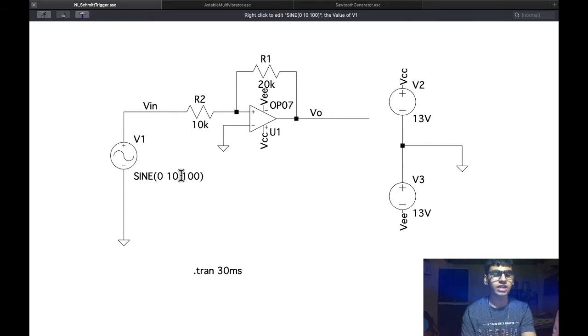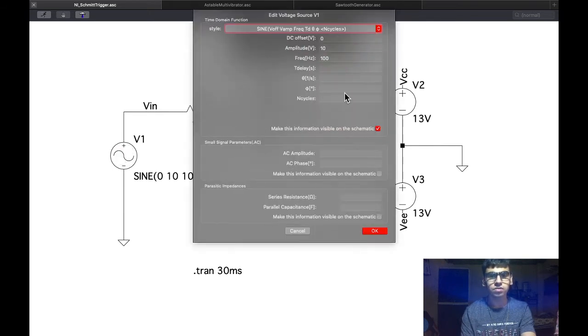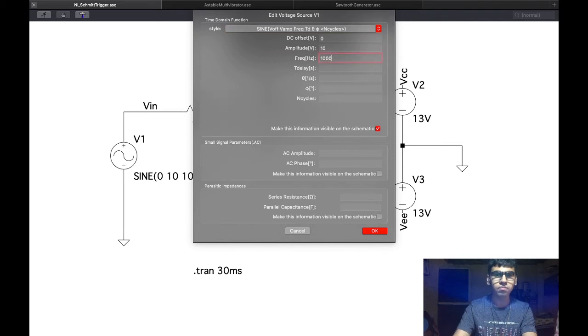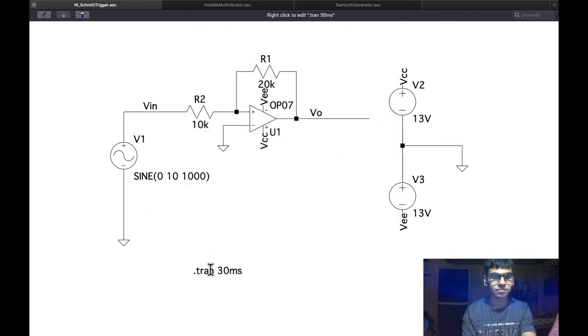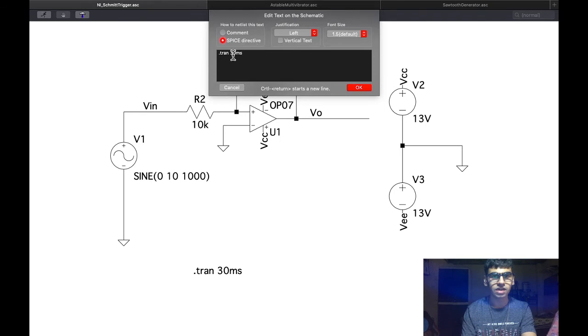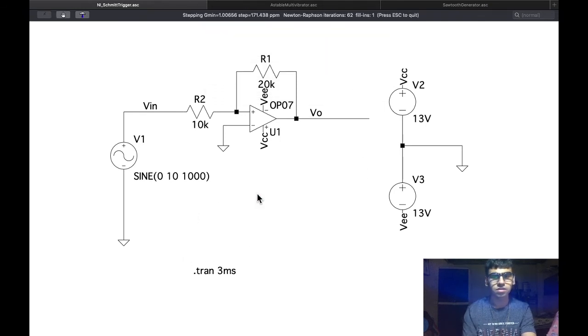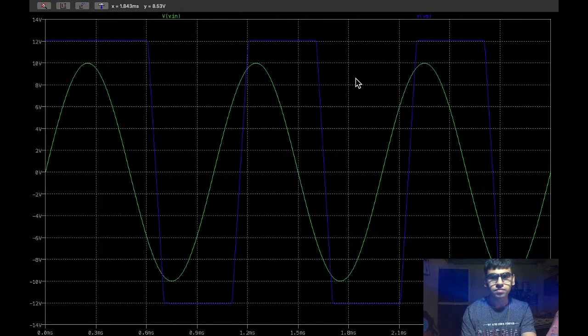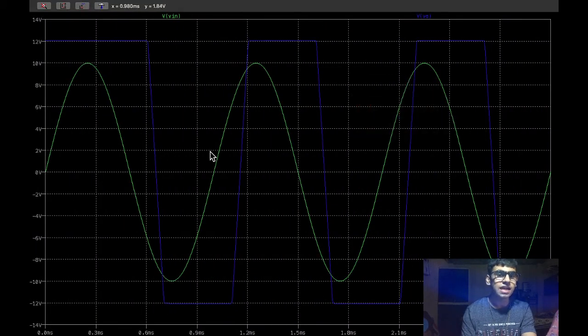Additionally, we should also check the high frequency response of the Schmidt trigger so that we know it's an improvement over the comparator. Changing this value to 1000 Hz and transient analysis to 3 ms we can see that there is very less distortion in the output. Even though we have sloping edges, it is not as bad as the comparators.